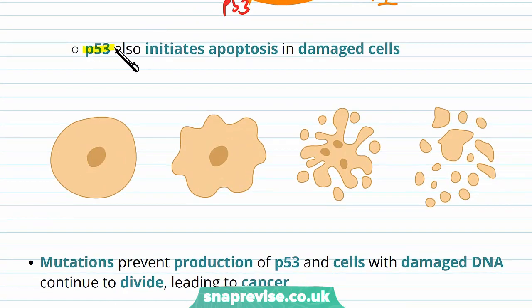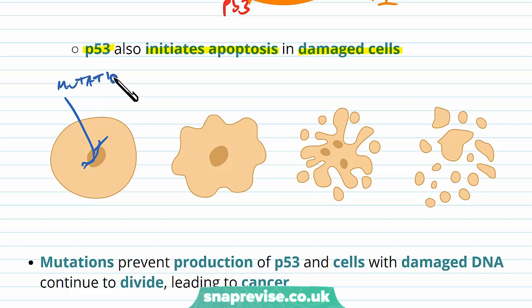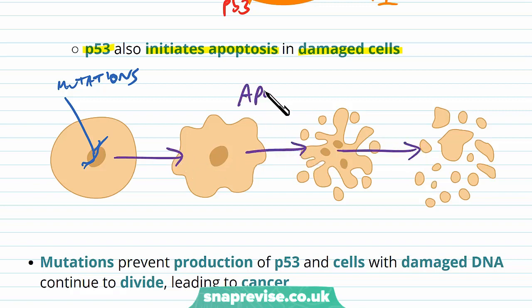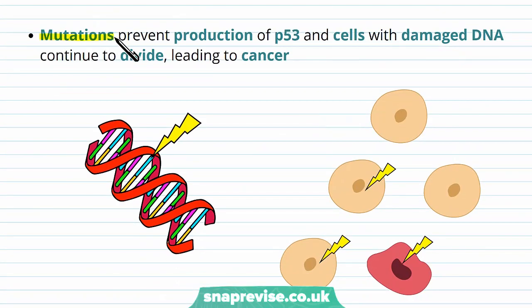The other function of p53 is that it initiates apoptosis in damaged cells. Any cells which have DNA with mutations, or that might be infected or damaged, it can encourage the cell to go through apoptosis — the form of cell suicide. If there's a mutation to the p53 gene, then the production of p53 is prevented and cells with damaged DNA will not be repaired or killed off, so they just continue to divide and eventually pass these errors on, leading to cancer.